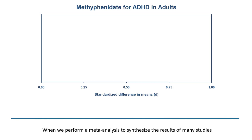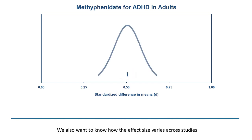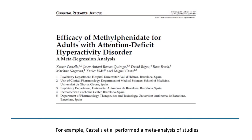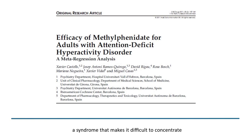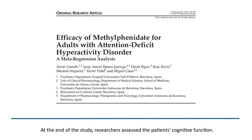When we perform a meta-analysis to synthesize the results of many studies, we want to know the mean effect size and how the effect size varies across studies. For example, Castells et al. performed a meta-analysis of studies that assessed the impact of methylphenidate on adults with ADHD, a syndrome that makes it difficult to concentrate. In each study, adults with ADHD were randomly assigned to either methylphenidate or placebo, and researchers assessed cognitive function. The effect size index is the standardized mean difference, D.